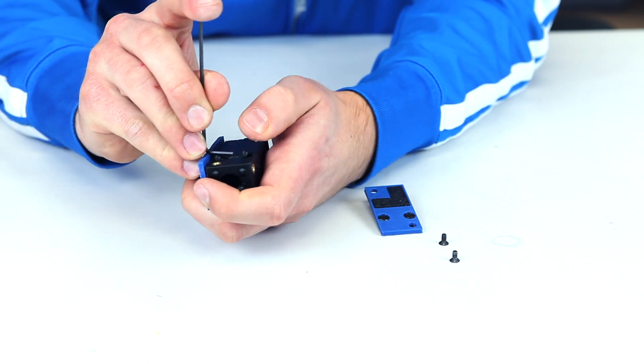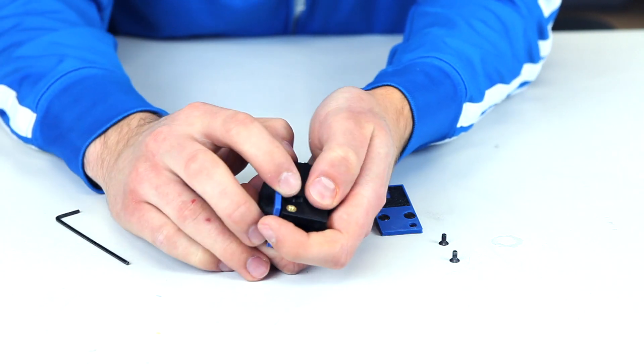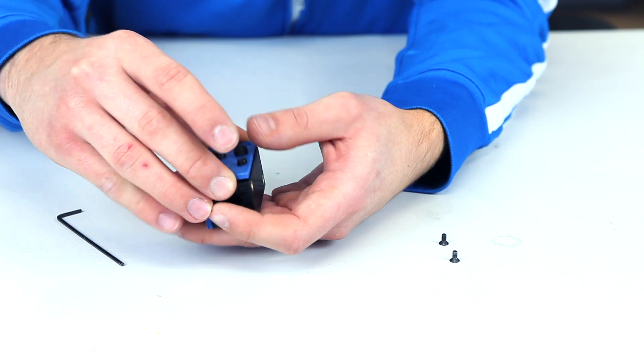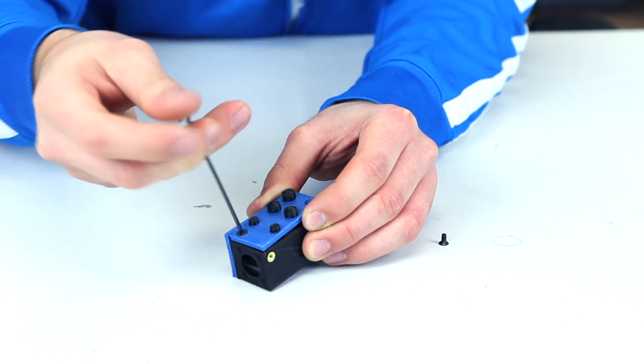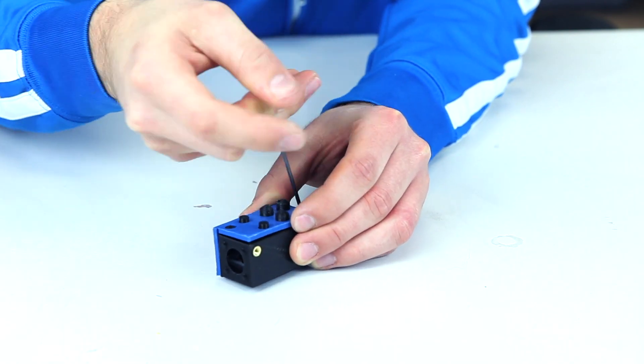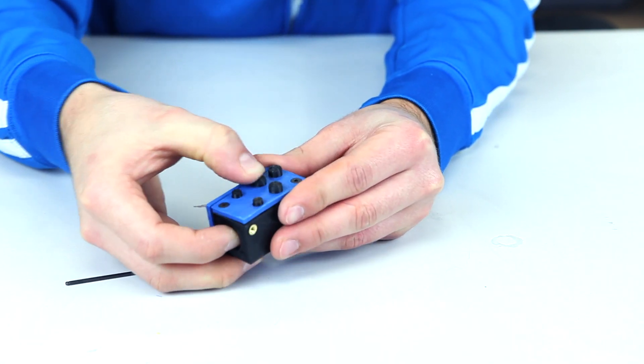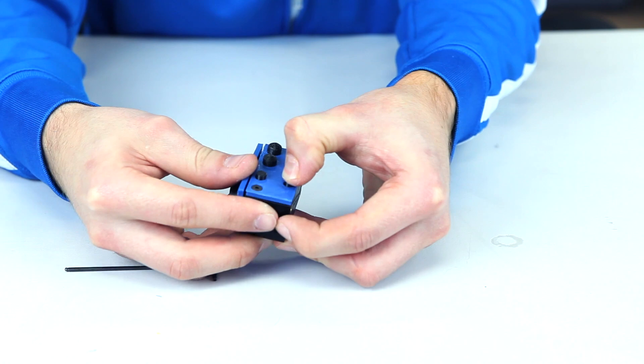It'll take a little effort, so don't be afraid to really push on it. Then take the panel with the buttons in it, press it on top, take the screws, and screw it all together. Once that's done, your button side will be complete, and you can play with them as you want.